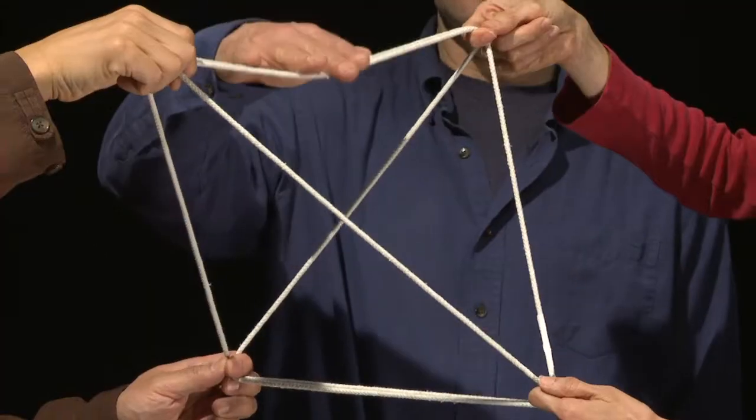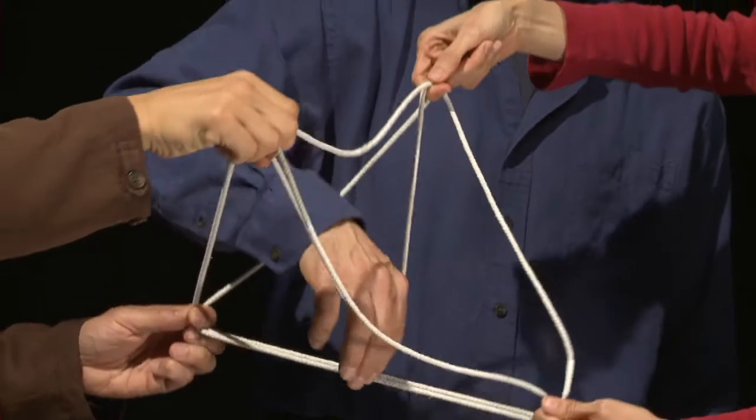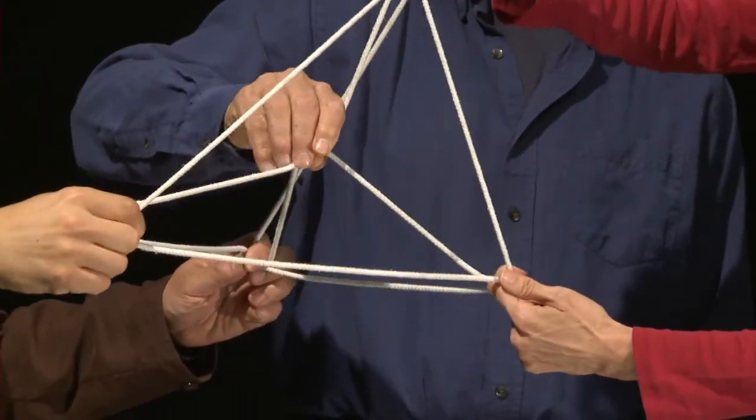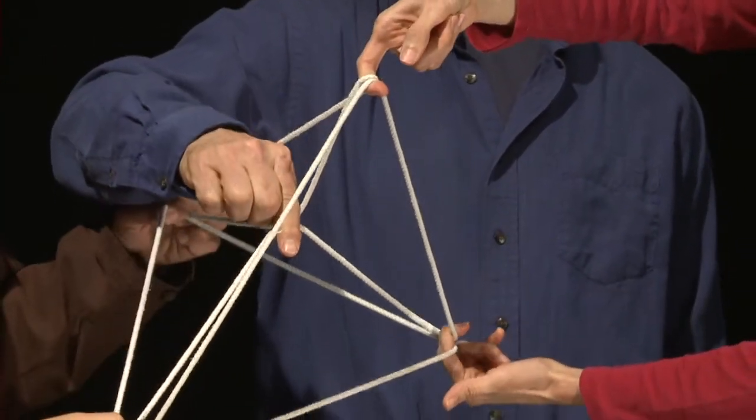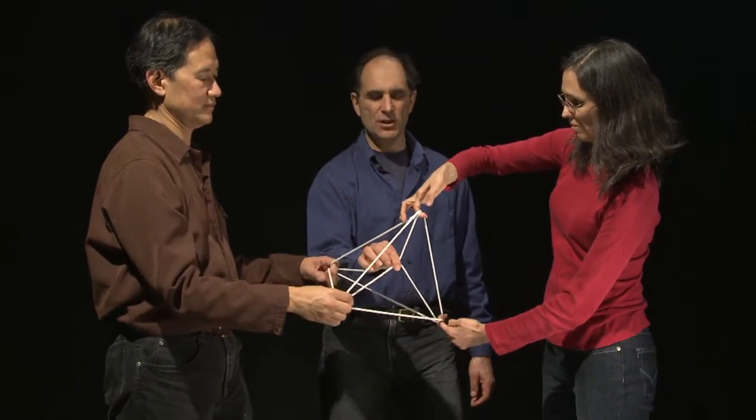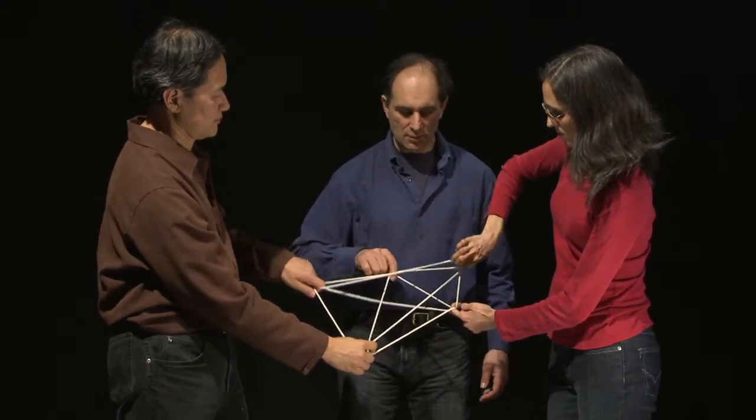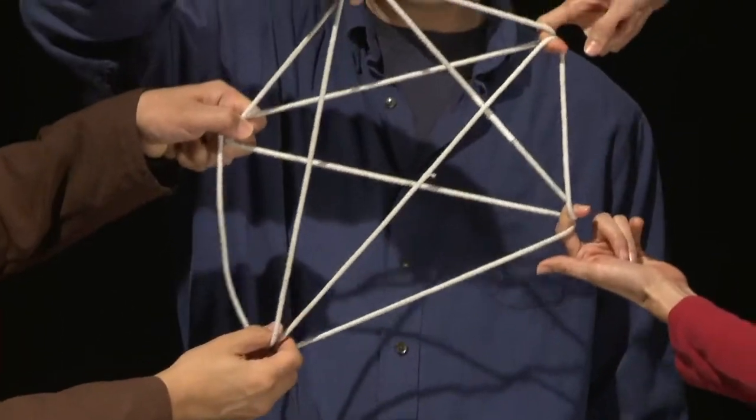And notice there are two pairs of double edges opposite each other. By pulling one of those edges to the center, we get what's called a four simplex, which has five vertices each connected by one string to each other vertex. We can now flatten that out to make a pentagram.